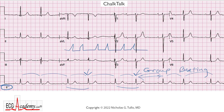There are a number of different things that will cause group beating — in particular here, groups of two. So what you have to think about is atrial bigeminy, where every other P wave is premature. Sometimes the pauses are due to blocked PACs, and then finally, group beating classically can be due to some kind of AV block. So let's figure out which it is.